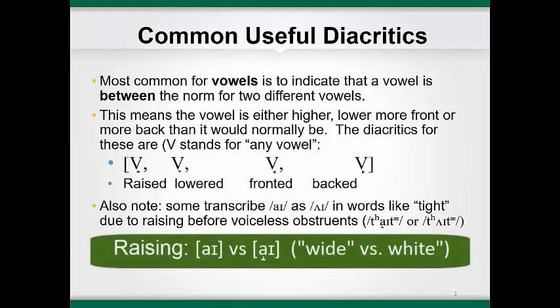An example of raising occurs frequently when the diphthong AI occurs preceding a voiceless consonant, like in the word 'white.' Listen to the difference in pronunciation of the diphthong in 'wide' versus 'white.' In 'wide,' the vowel starts at a lower jaw position than in 'white.' In 'white,' the first part of the vowel is raised more towards the mid-central vowel AH. Listen again: AI versus AI. Wide versus white.